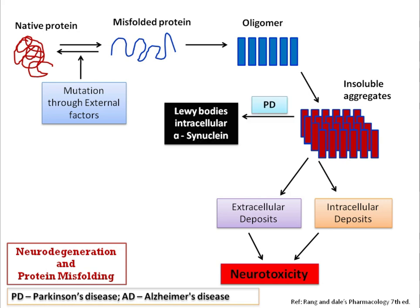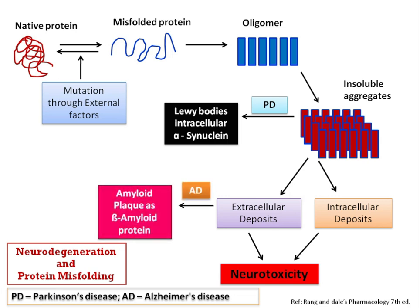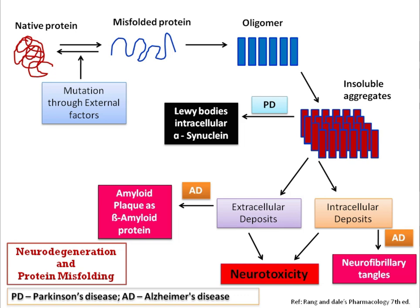In Parkinson's disease, these insoluble aggregates are converted into Lewy bodies intracellularly, which is called alpha-synuclein protein deposition, ultimately generating the pathogenesis of Parkinsonism. In Alzheimer's disease, the extracellular deposits are called amyloid precursor protein or beta-amyloid protein, and intracellularly they are called neurofibrillary tangles. Both these deposits are responsible for neurotoxicity, neurodegeneration, and neuronal death.